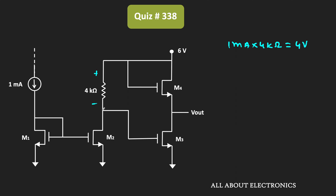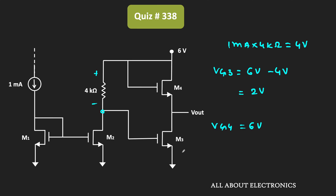The voltage drop across the 4 kΩ resistor is 1 mA × 4 kΩ = 4 V. Therefore the voltage at that node, VG3, is equal to 6 V − 4 V = 2 V. So the gate voltage of MOSFET M3 is 2 V. Similarly, the gate voltage of the fourth MOSFET M4 is equal to 6 V.